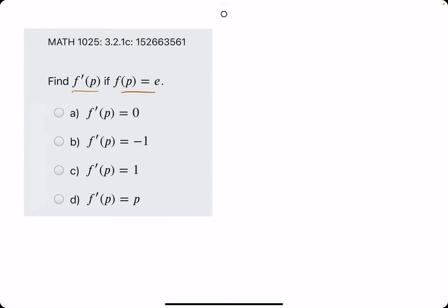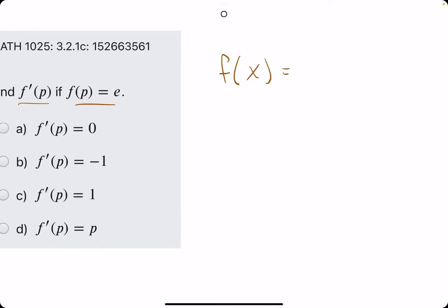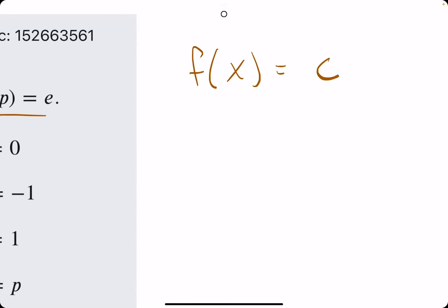So a big rule here to go over is that if we have any function that is just a constant c, then the derivative of that constant is always 0.